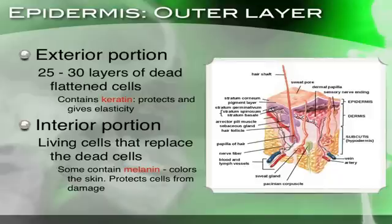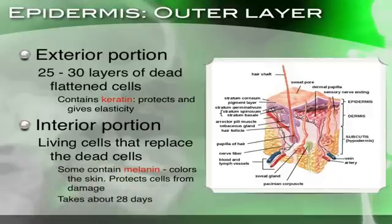The more melanin you have, the darker you're going to be, and actually that does give some protection from the sun. This process of the living cells beneath replacing the dead cells at the surface takes 28 days. So every 28 days, you actually have new skin — that's pretty cool.